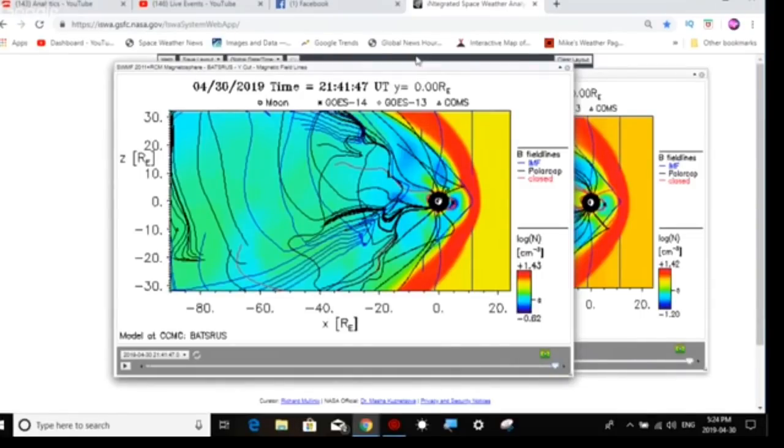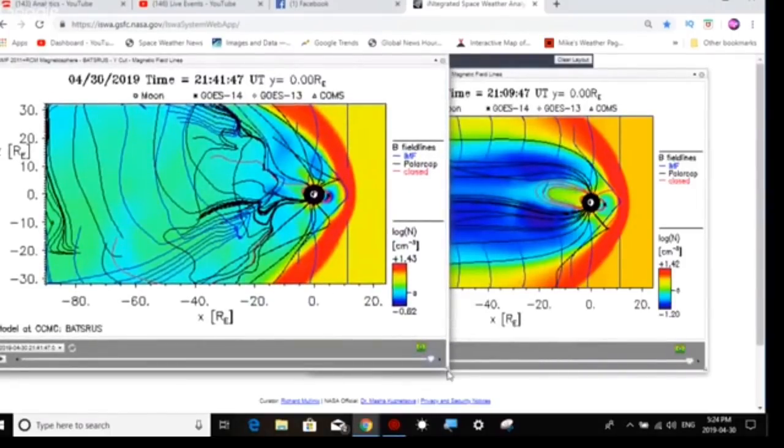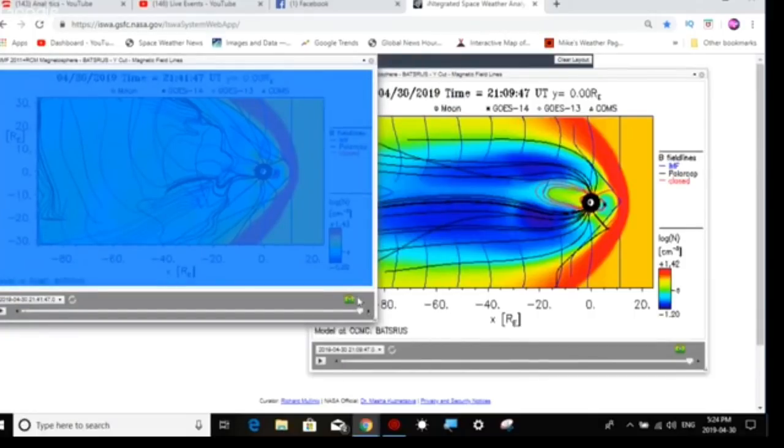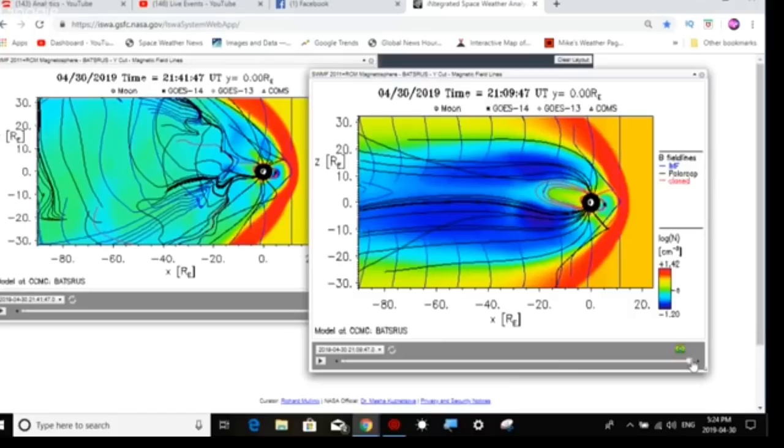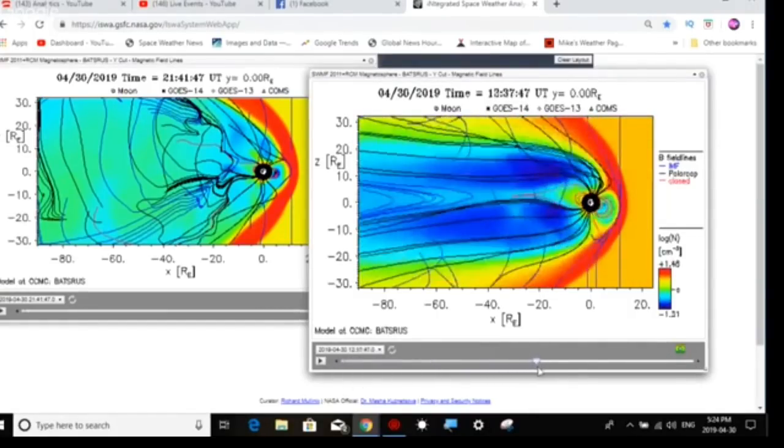Can anybody else explain this? I've been looking at these images for a couple years now and I've never seen anything like this. This is how it should look normally. That red line up in front, that is our bow shock.